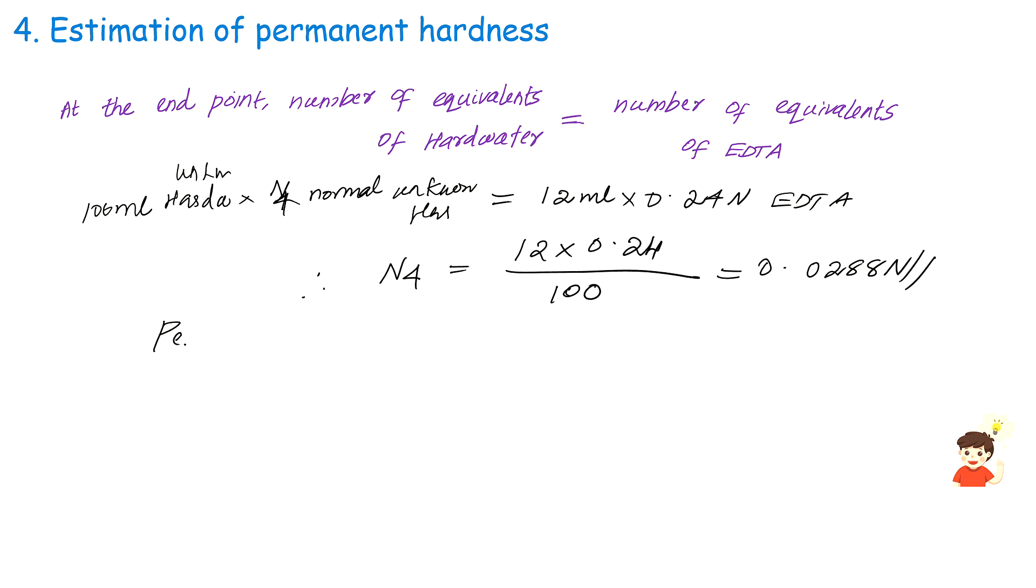Permanent hardness equals 0.0288 times 50 times 10^3 mg per liter or ppm, which equals 1440 ppm or mg per liter.